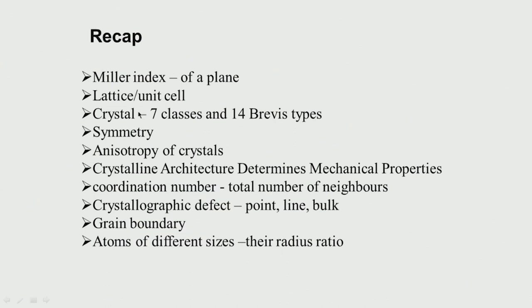Let us recap what we did. First we looked at what is the Miller index of a plane — that means a plane has a unique identity represented by this Miller index. Then, what is a lattice unit cell? Each crystal is made up of certain repeating units — infinite repeating units — and that is called the unit cell. There are 7 classes of these unit cells and then there are 14 Bravais types.